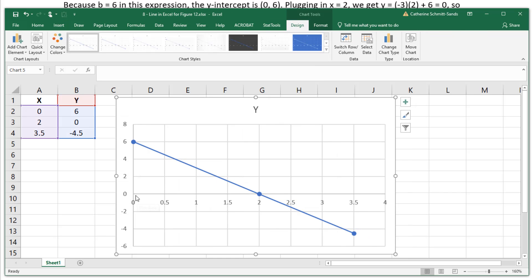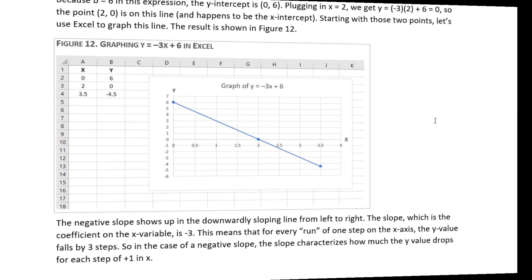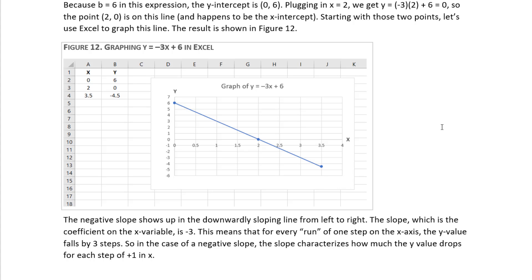You see the x-axis is here, the numbers are along it, the y-axis is the vertical axis and the numbers are along that. It's added a chart title that's not very helpful. So I'm going to click on it and type graph of y equals negative 3x plus 6. The negative slope here shows up in the downwardly sloping line from left to right. That's the distinctive shape of a negative slope on a line.